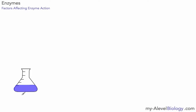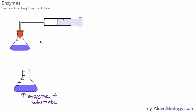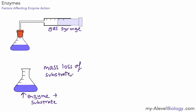Here I've got a conical flask and in that flask I have some enzyme and some substrate. Enzymes can be extracted from living things, so this is quite a feasible experiment. One way you could measure the rate of the reaction is by measuring the amount of gas produced — you can collect the gas in a gas syringe, which measures how much gas has been given off. Something else we could do is measure mass loss of substrate.